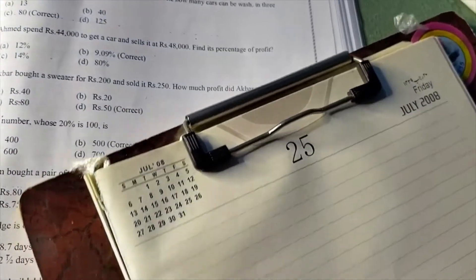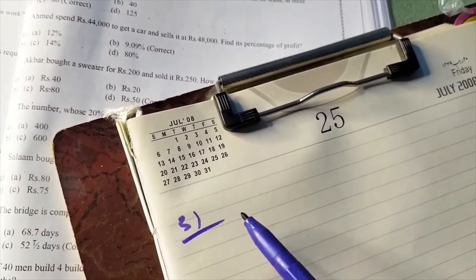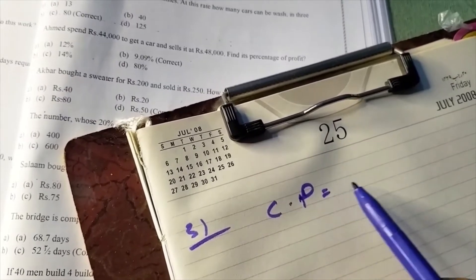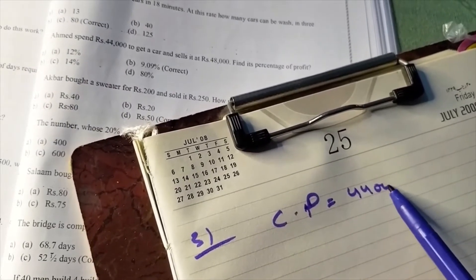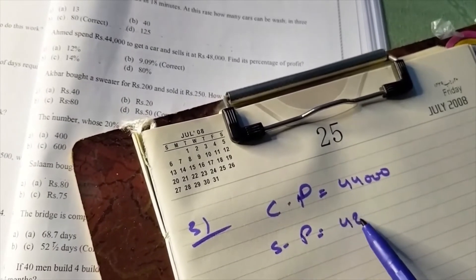You need to find the percentage of profit. First, let me identify the cost price (CP), which is Rs. 44,000, and the selling price (SP), which is Rs. 48,000.